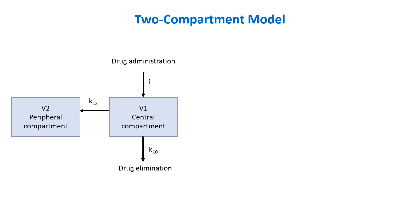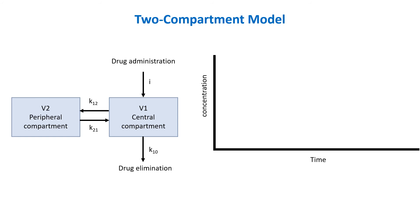It is denoted by K10 in the diagram. During this time, as the drug is eliminated from the central compartment, the drug from the peripheral compartment moves back into the central compartment to maintain equilibrium. This redistribution is denoted by K21.